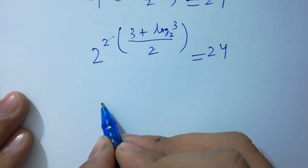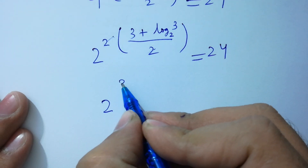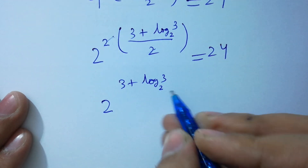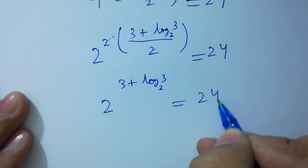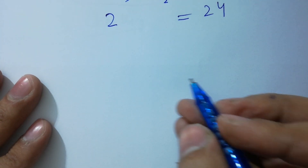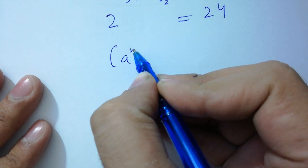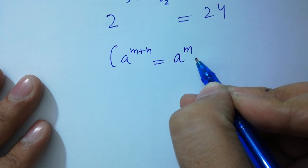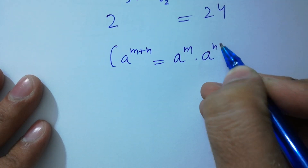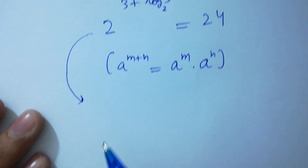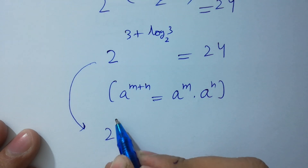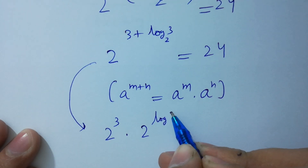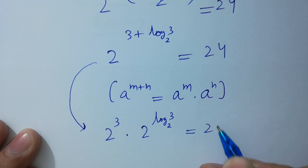We have 2 to the power 3 plus log 3 to the base 2 equal to 24. Since a to the power m plus n equals a to the power m times a to the power n, it will be equal to 2 to the power 3 times 2 to the power log 3 to the base 2 equal to 24.